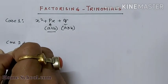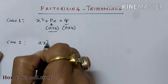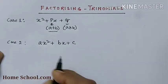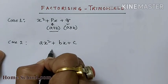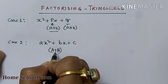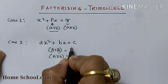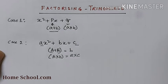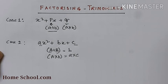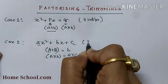Case 2 is like this. We can say ax² + bx + c, where a, b, c are all integers. Here also we want to find two integers such that their sum equals b and their product equals a × c. So there are two types of factorization of trinomials — Case 1 involves two integers, and Case 2 involves three integers.